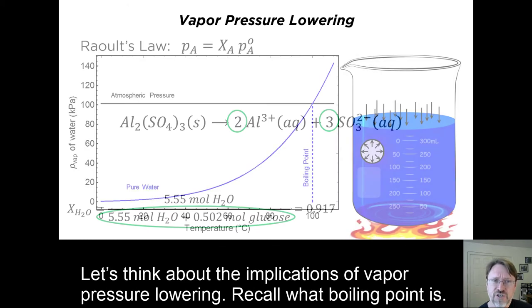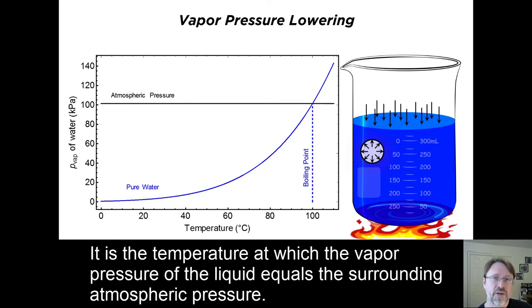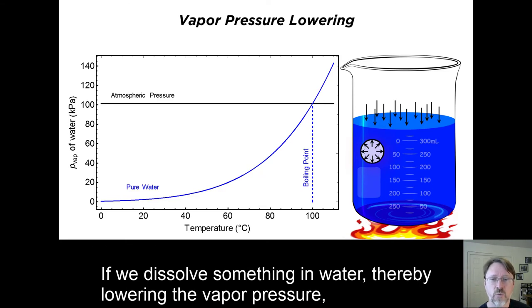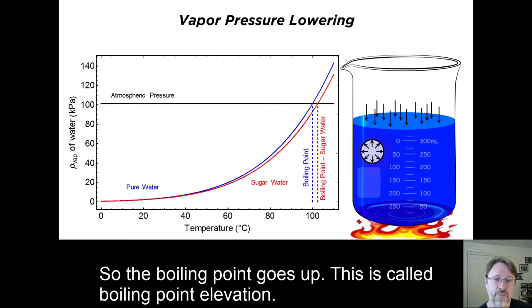Let's think about the implications of vapor pressure lowering. Recall what boiling point is. It is the temperature at which the vapor pressure of the liquid equals the surrounding atmospheric pressure. If we dissolve something in water, thereby lowering the vapor pressure, we change the temperature at which the vapor pressure matches the surrounding atmospheric pressure. So, the boiling point goes up. This is called boiling point elevation.